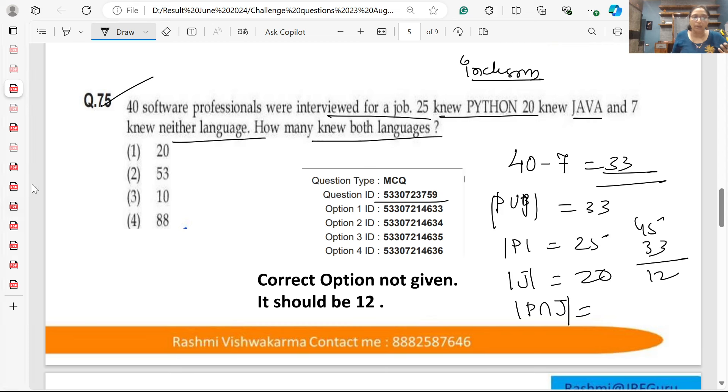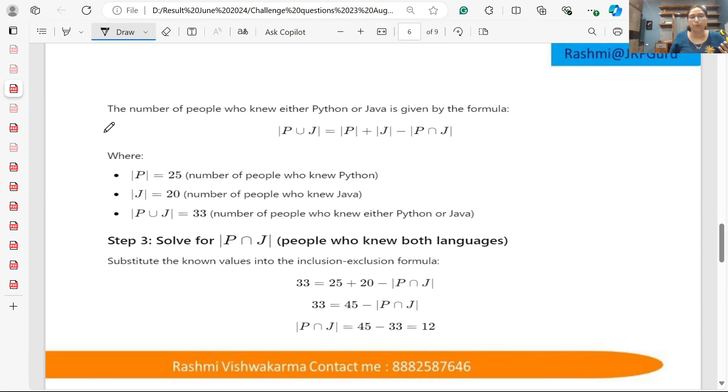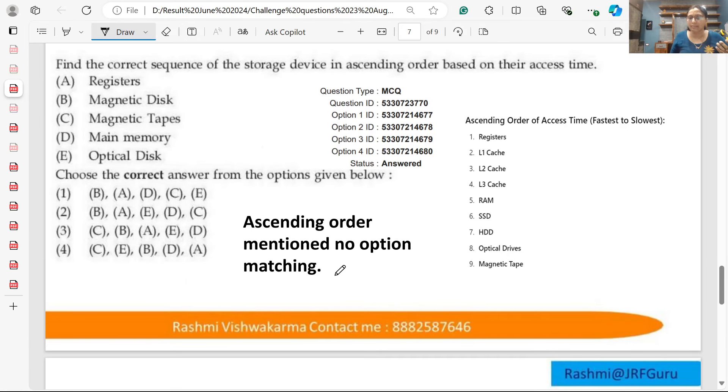And P intersection J—calculating 45 minus 33 will give you 12. And no option has the value 12. Complete solution. You can apply this. Challenge the second question definitely.